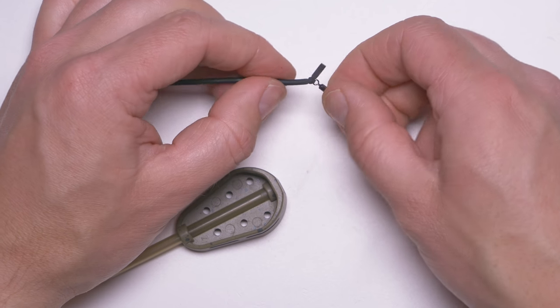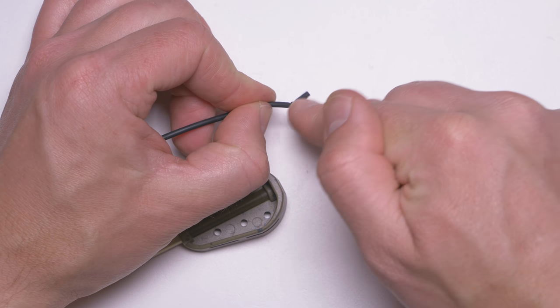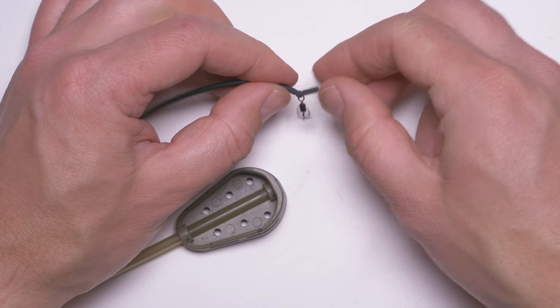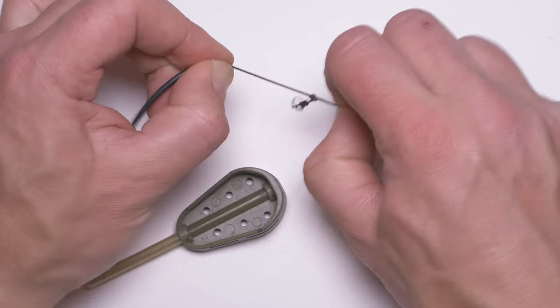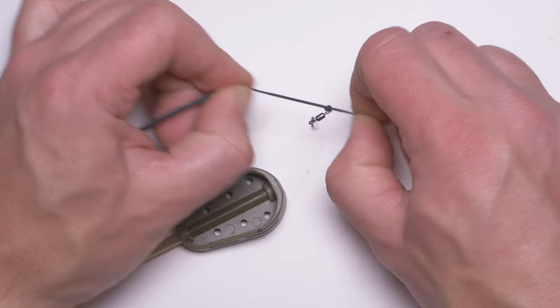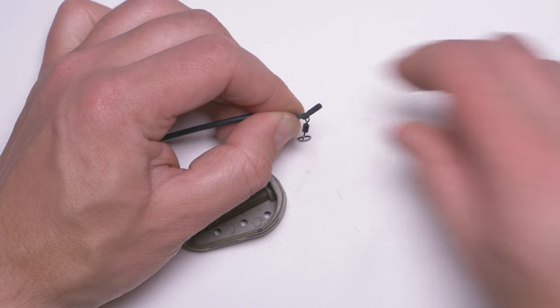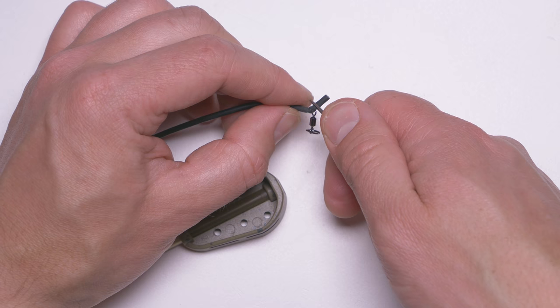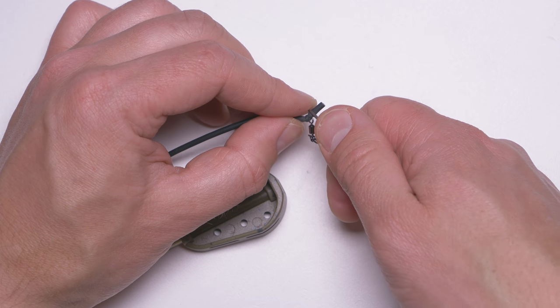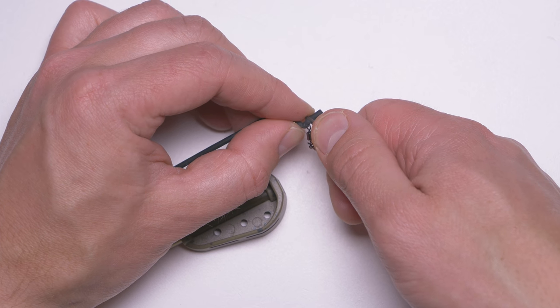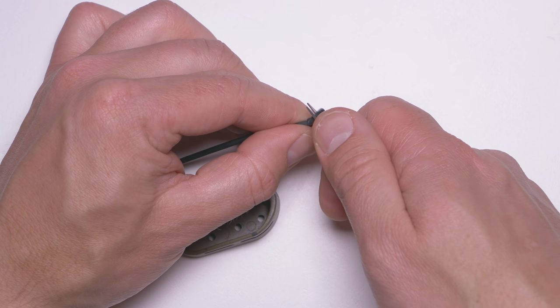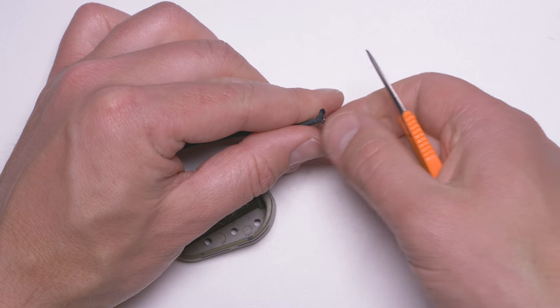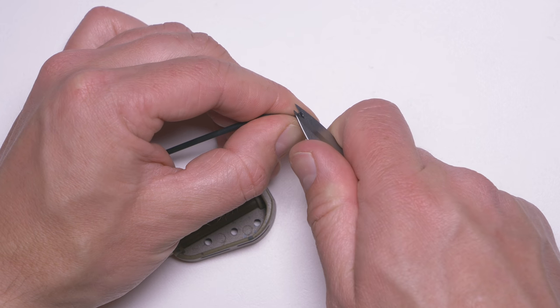Now when we want the tag end at the right position, we just hold both tag ends and set the knot properly. Then we'll cut off the tag end, probably a couple millimeters away from the knot, just like that. Maybe even a little bit shorter.